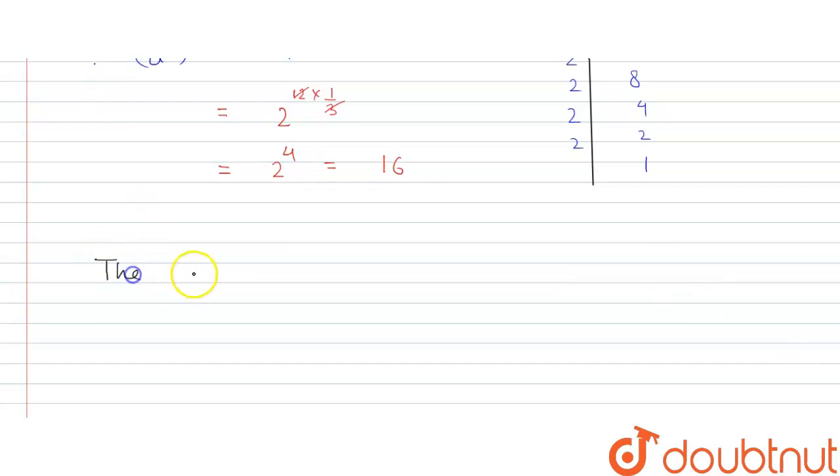So finally we can write the cube root of 4096. The cube root of 4096 is equal to 16. This is the final answer of this question.